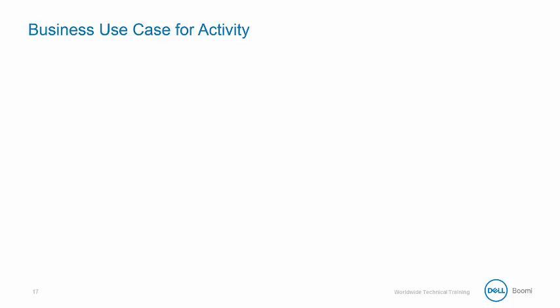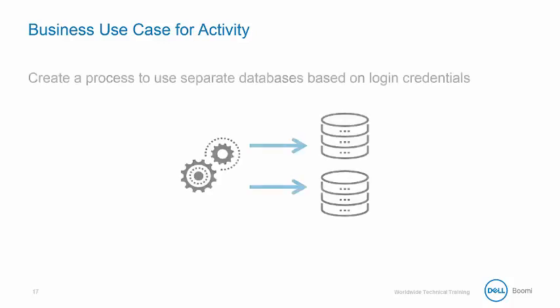Let's review the business use case for our extensions activity. Your company's system integration team wants to create a process to use separate databases based on login credentials. This allows the data in both the production and development databases to be current and provide for more accurate testing of system modifications and upgrades. This can be accomplished by changing the parameter values of extensions in a process.